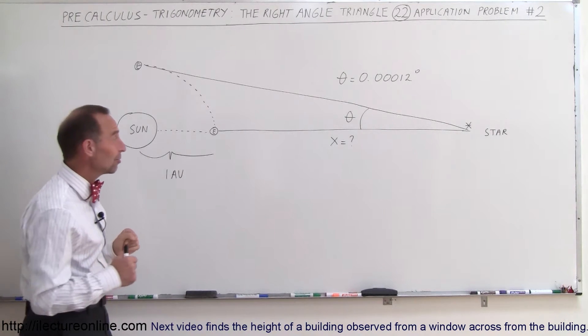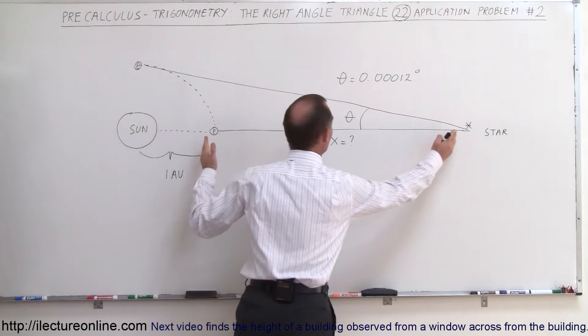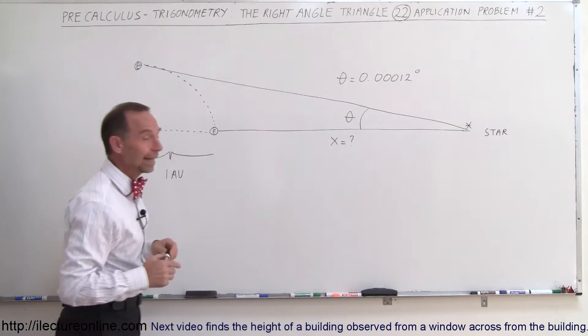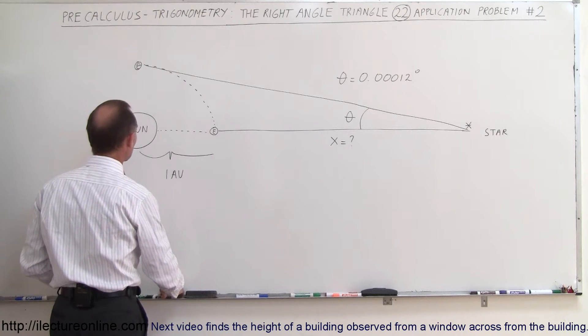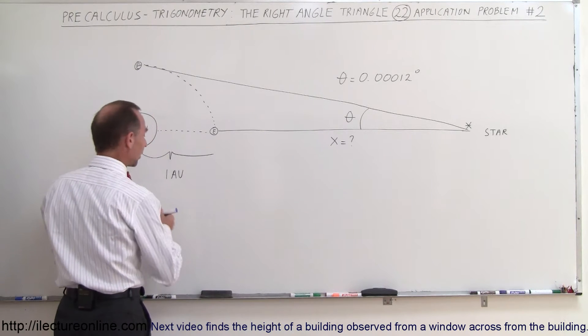The question is, is that enough information for us to figure out how far it is to the star? And the answer is yes, because now what we can do here is imagine that we have this triangle.